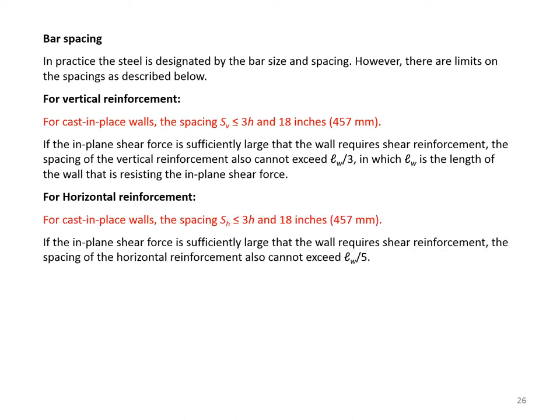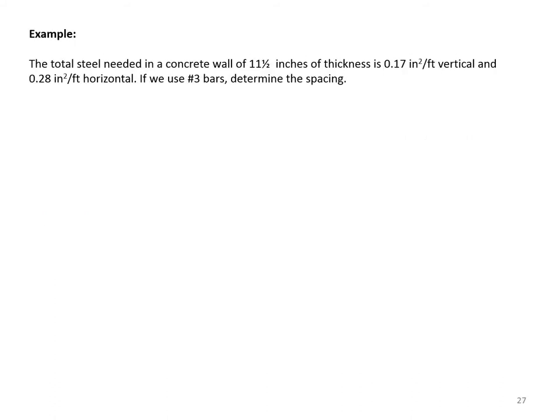For horizontal reinforcement in cast-in-place walls, spacing must also be less than 3h and 18 inches. If the in-plane shear force is sufficiently large, the spacing of horizontal reinforcement also cannot exceed LW/5.